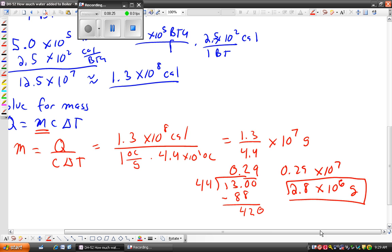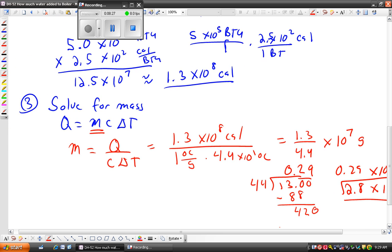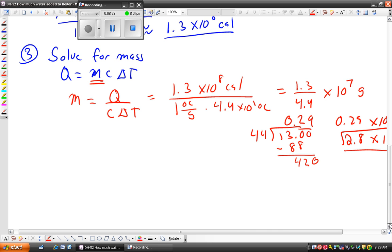But the question doesn't ask us how many grams of water. What it actually asks us for is how many gallons of water. So now the last thing we need to do is we need to convert grams of water to gallons. Now, a conversion factor you may know from your kitchen is that one gallon of milk, if you ever look on the side, is actually 3.78 liters, or 3,780 milliliters, which is the same as 3,780 grams of water.